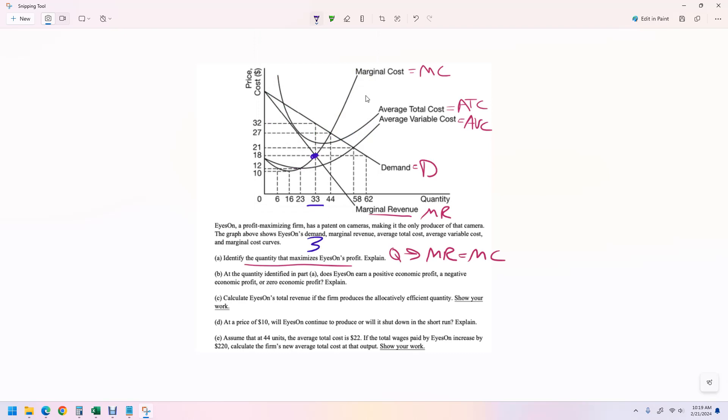That's the quantity that maximizes their profit because that's where MR equals MC. However, that's not going to be the price. They're going to mark up the price. They say to themselves, what's the highest price that we can charge and sell 33 units? And that's 32. So the profit maximizing price is going to be 32.